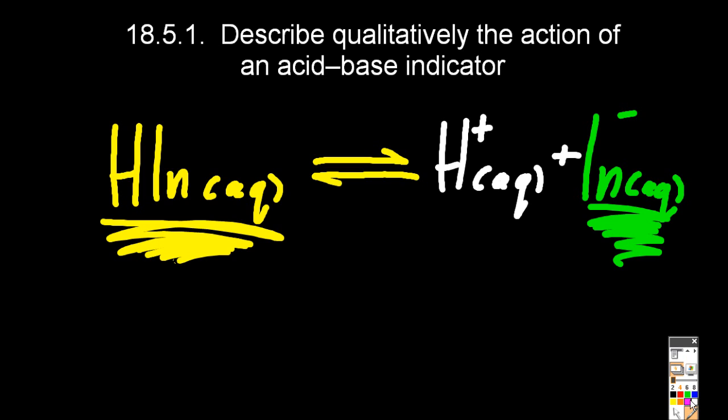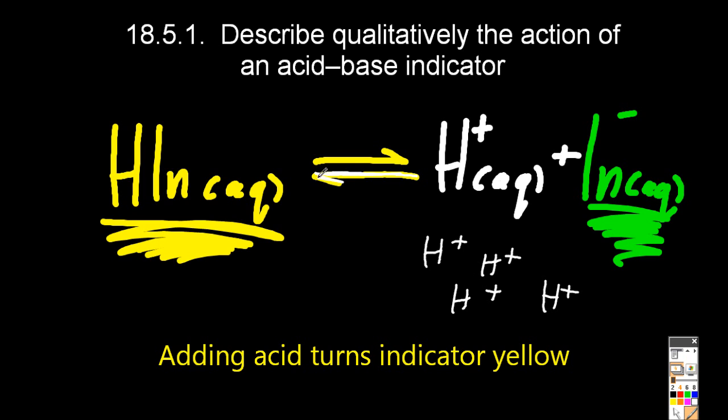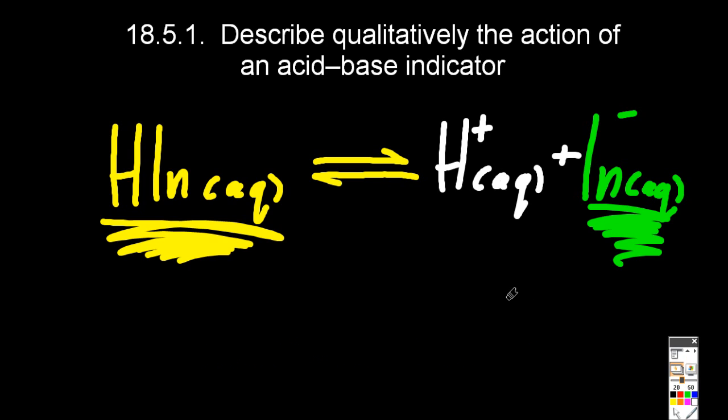Now using Le Chatelier's principle, for an equilibrium if it's stressed it moves to oppose the stress. If I add H+, then the equilibrium will shift to the left. So the green colour will fade and the yellow colour will start to come in stronger.